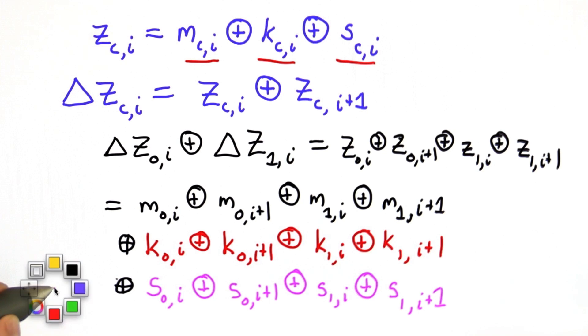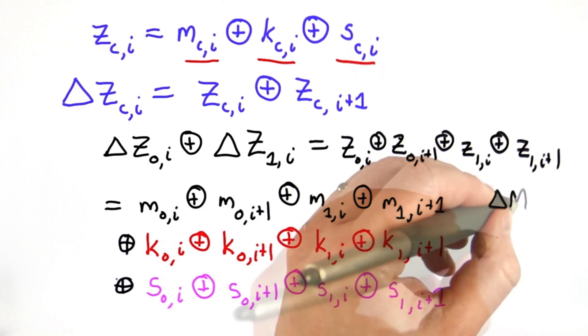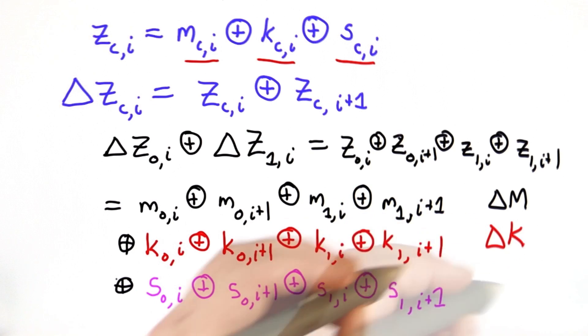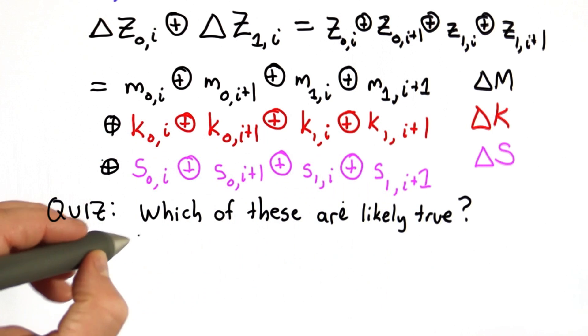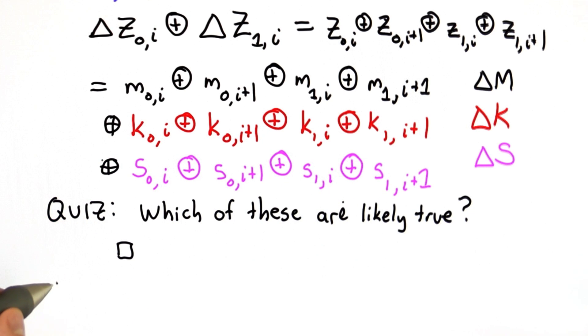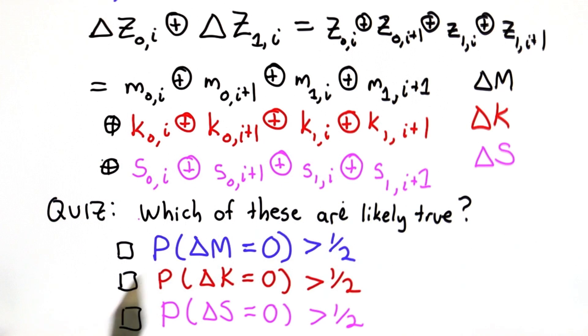Supposing we could separate each of those, the question is which of these inequalities are likely to be true. Each one we're asking whether the probability of that part being 0 is greater than 1 half. If it was a uniform distribution, the probability would be equal to 1 half.